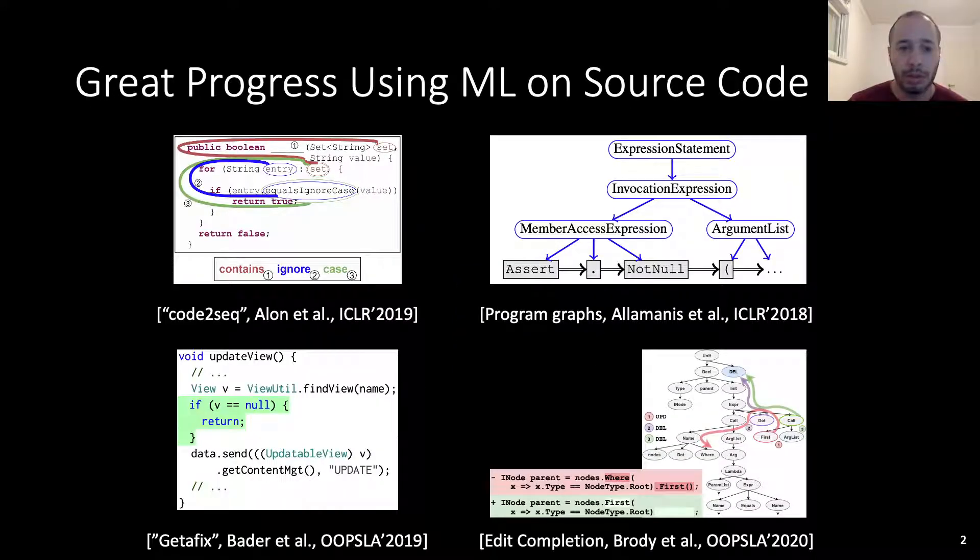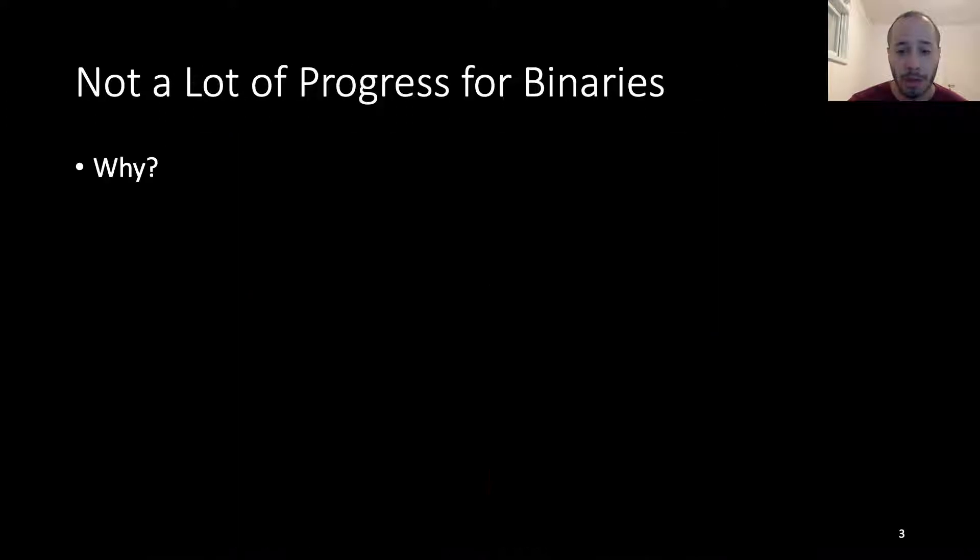In recent years, great progress has been made using machine learning to help programmers understand, write and fix their code. On the other hand, there hasn't been a lot of progress in addressing similar problems for binaries. Why is that?